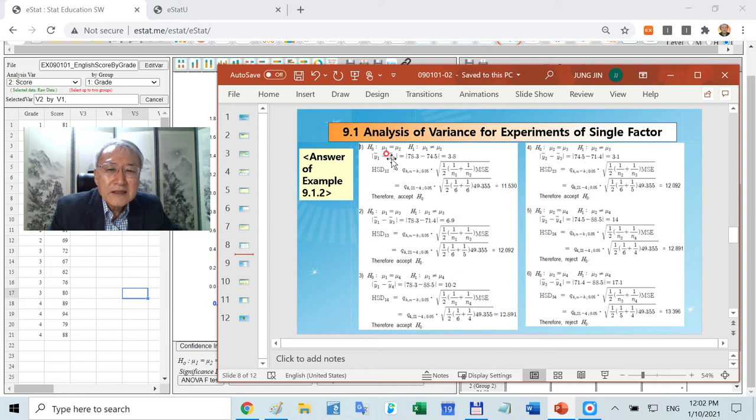Depending on the test, you need to look up the HSD value. Find this value first: qk and n minus k. K is in this case 4. N is the total number of samples, that is 21. 21 minus 4.